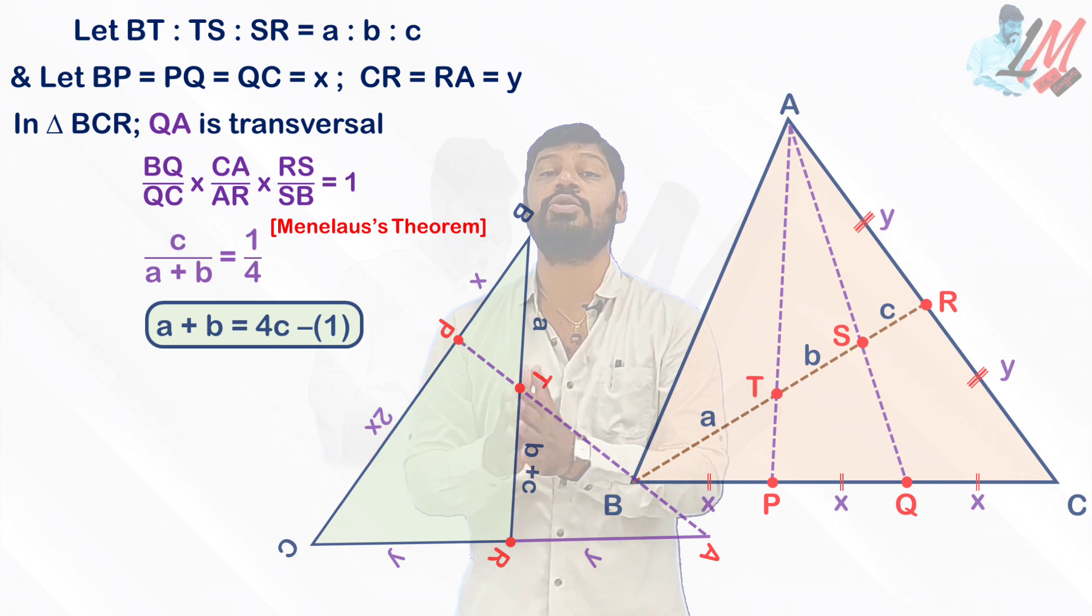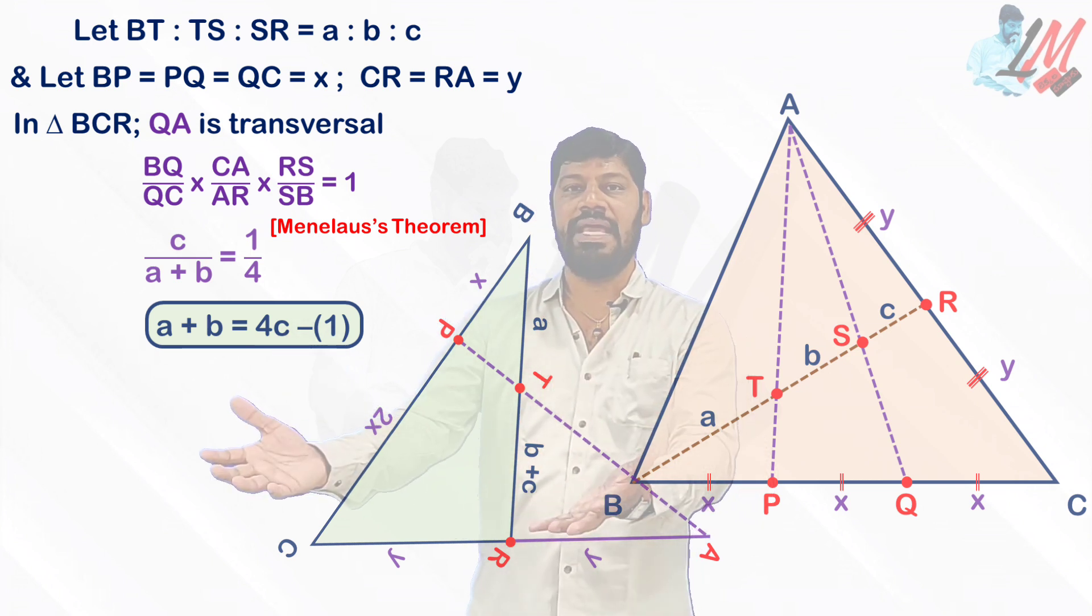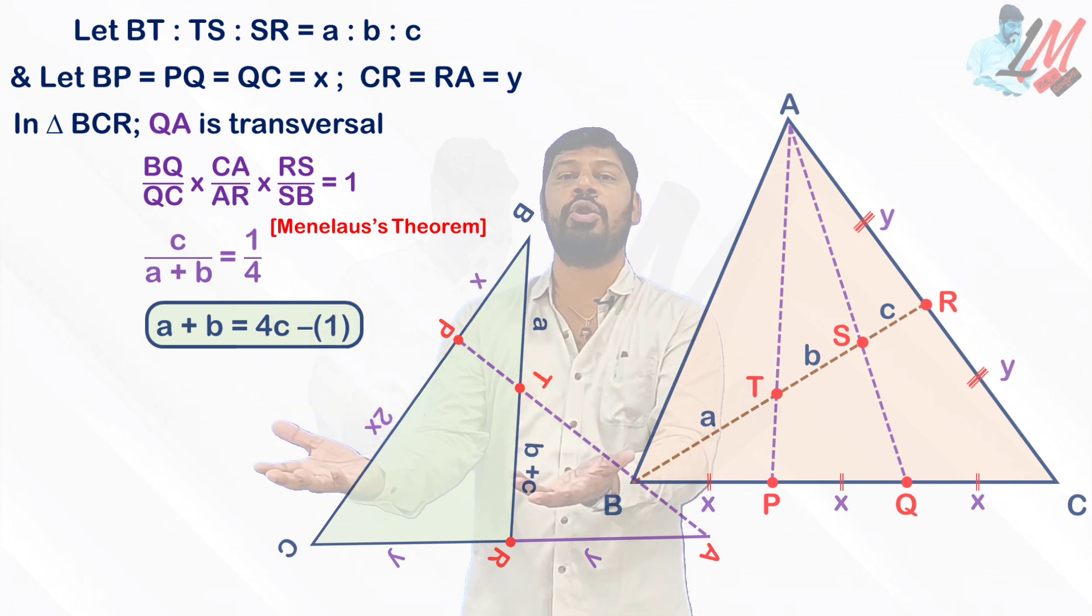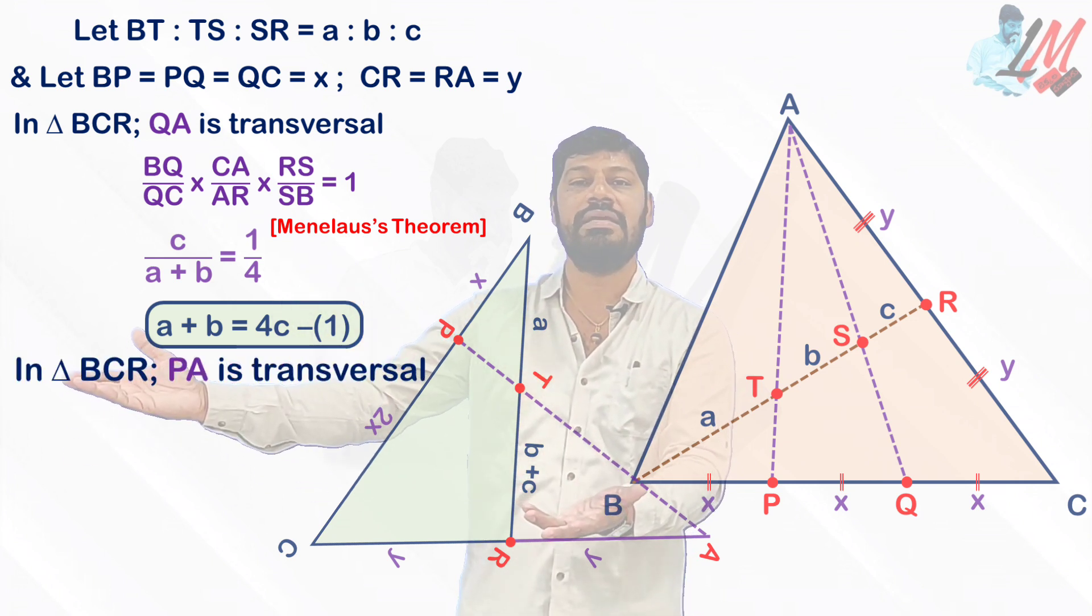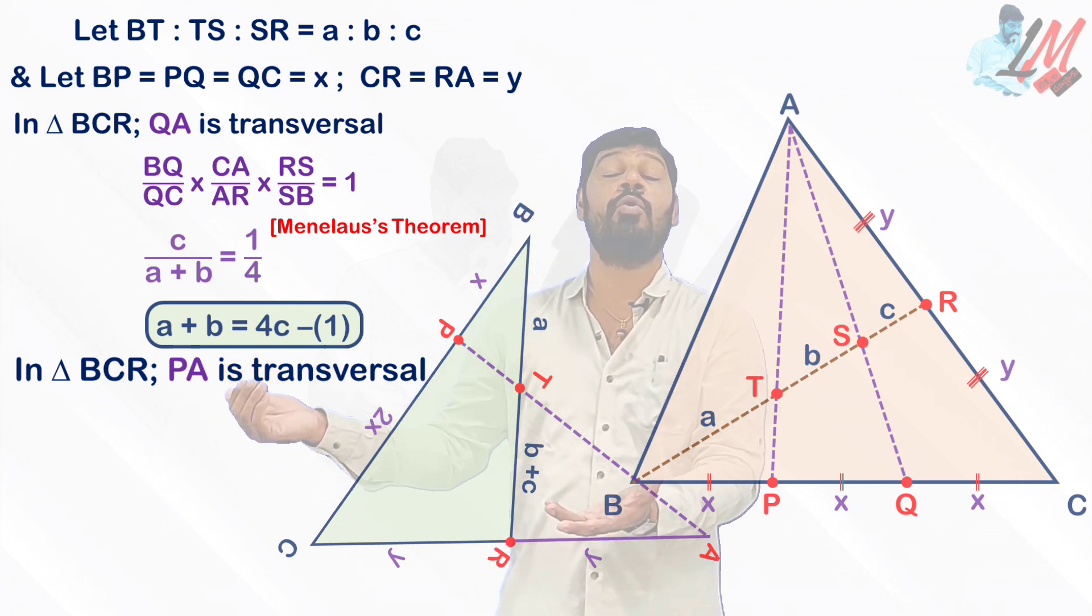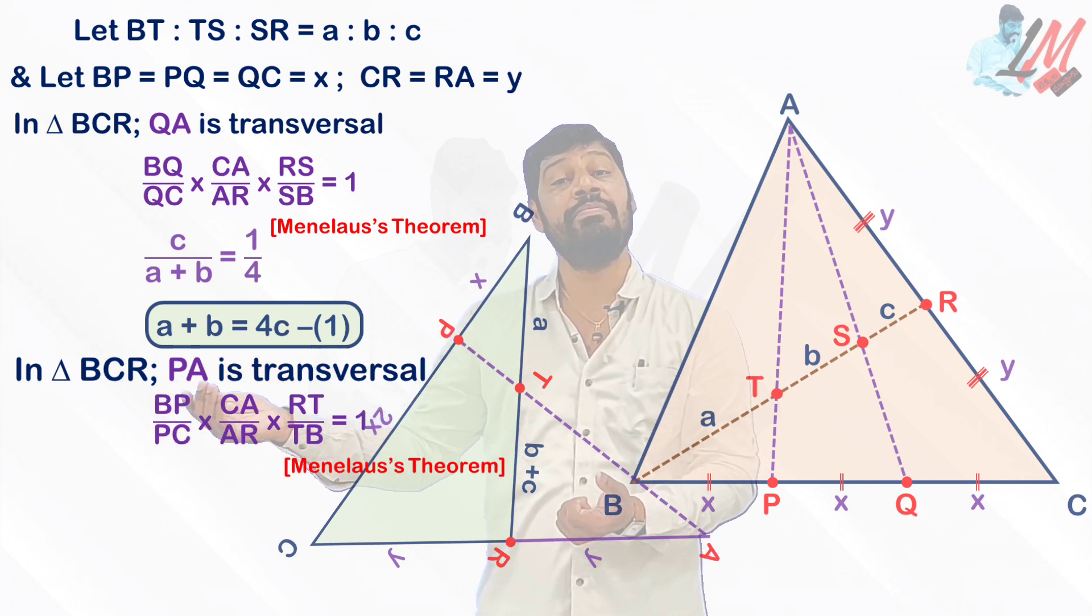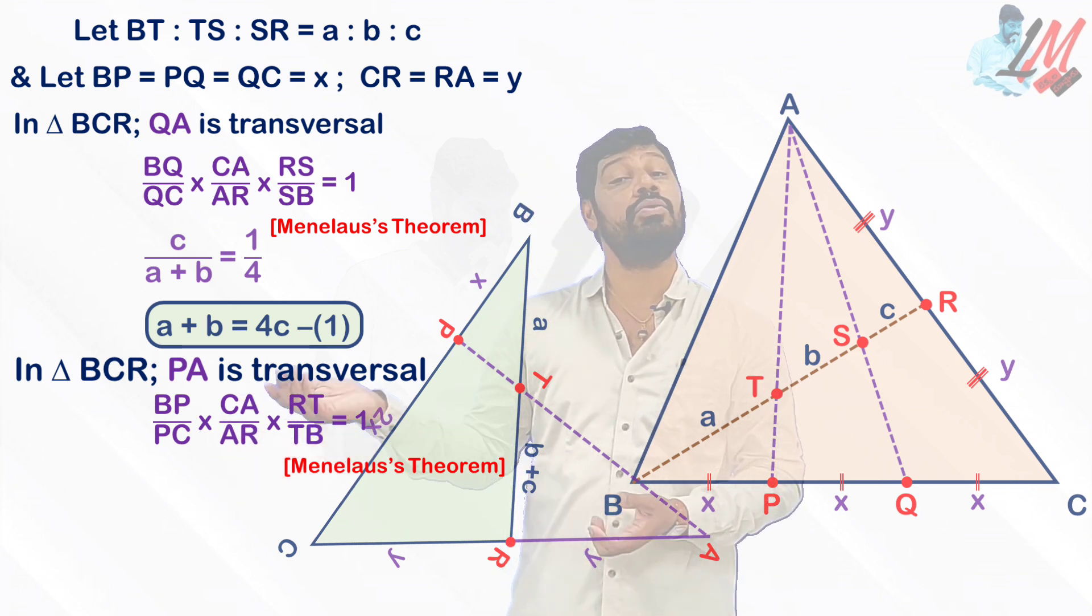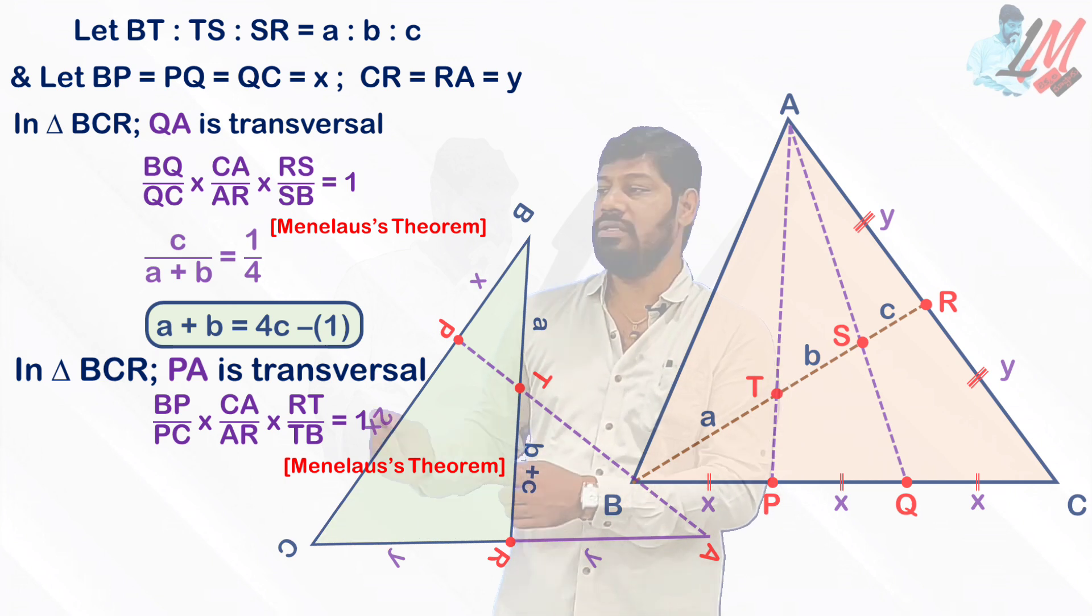So in this particular figure also you can apply Menelaus's theorem for the same triangle, but here the transversal is different. So if you apply Menelaus's theorem here, what you are going to get, observe carefully in triangle BRC. Let me write as PA as transversal. Then what you are going to get: BP by PC into CA by AR into RT by TB equal to 1. Just I am substituting the values.